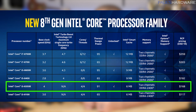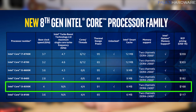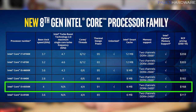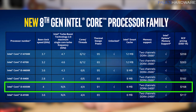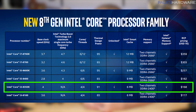Next up is the Core i3-8350K — still no turbo boost or hyper-threading, but it's unlocked for overclocking. It is more than $50 more expensive than its sibling the 8100, so that's a pretty big jump, but it's kind of what they had to do to keep it competitive with their own other processors. It has a 91W TDP and 6MB of cache.